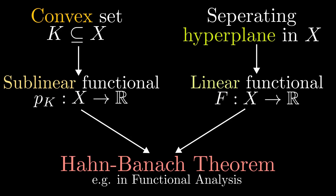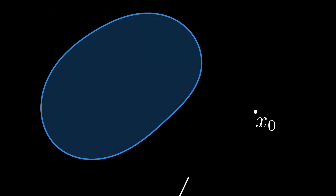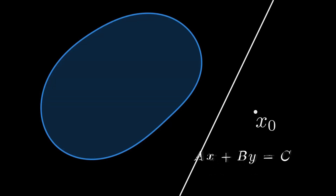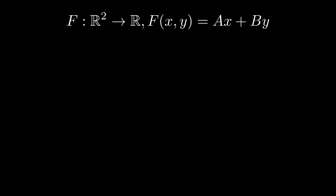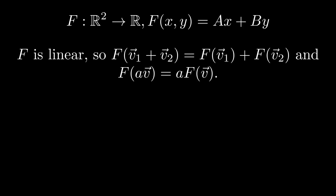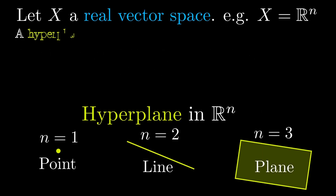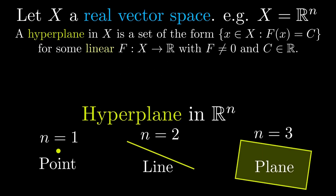This is a very general theorem, which is for instance very useful in functional analysis. So let's start by describing the line. It is described by an equation of this form. We may use the left side of this equation to define a function from R^2 to the real numbers. This function is linear: the value of the sum of two vectors equals the sum of the values, and we can pull out any scalars. Then the line consists of all points where this function assumes the value C. More generally, a subset is a hyperplane if it consists of all points where a linear functional assumes a certain value, where linearity is defined like this.